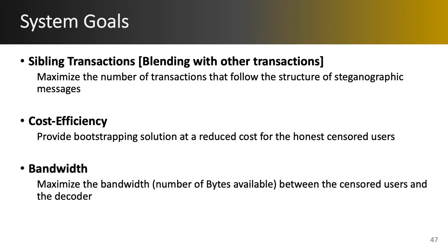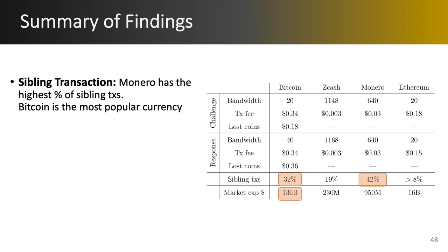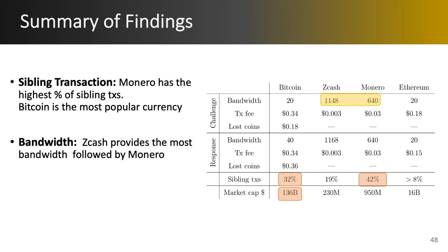Finally, we want to maximize the bandwidth — the number of bytes we can transmit through the rendezvous. The table shows a summary of our findings. We see that Monero has the highest percentage of sibling transactions at 42%, with Bitcoin next at 32%, and Bitcoin is arguably the most widely used currency worldwide. Among the four, Zcash — a privacy-preserving currency that hides the amount and recipient of a transaction — provides the most bandwidth, followed by Monero.